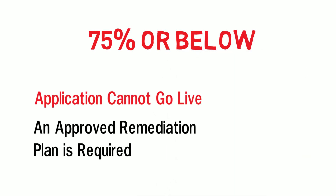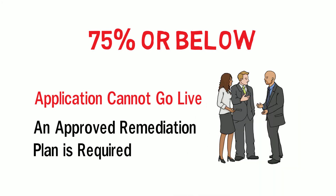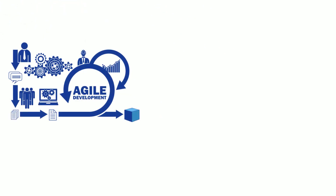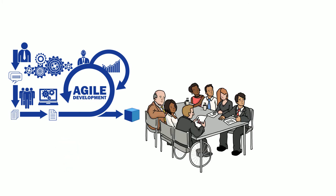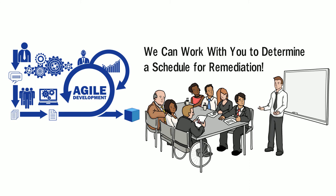However, if the score is 75% or below, the application cannot go live, and an approved remediation plan is required before the application can move forward. If your software is being developed using Agile methodology, or if you have other special development details, the CMS Section 508 team will work with you to determine an appropriate remediation schedule to fit your plan.